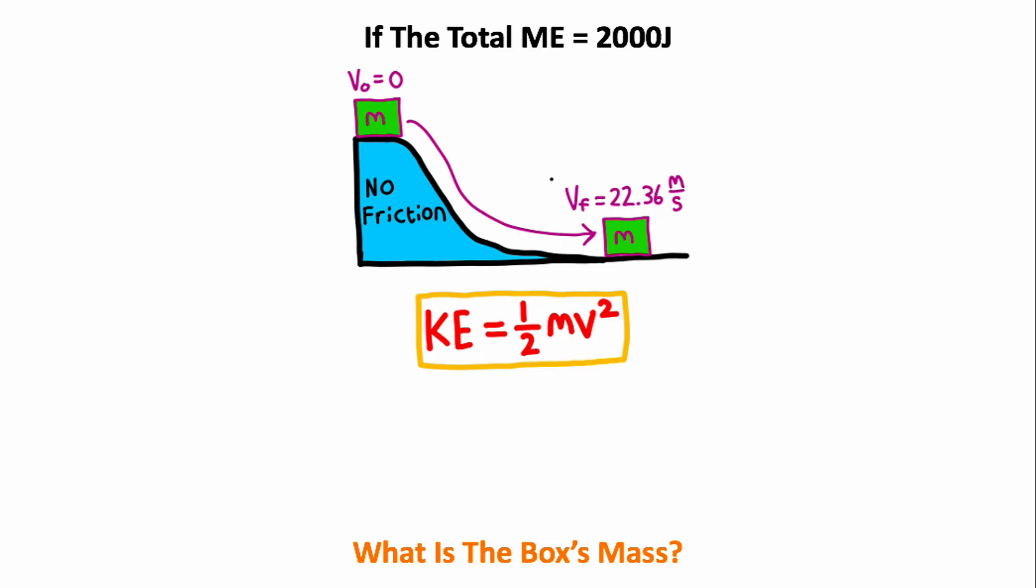The reason I can use this equation is because the box has descended all the way down the hill. That means at the end of the descent, there's no gravitational potential energy left, meaning all of the mechanical energy is going to be kinetic energy. So our kinetic energy will be the total mechanical energy, which is 2,000 joules. This is going to equal the right-hand side of the equation, which is one-half mass times velocity squared, where velocity squared is 22.36 squared.